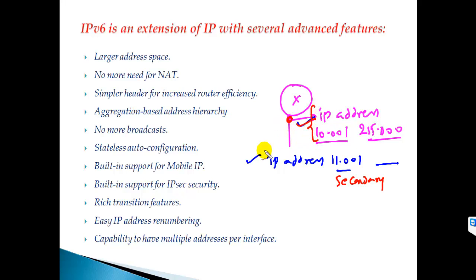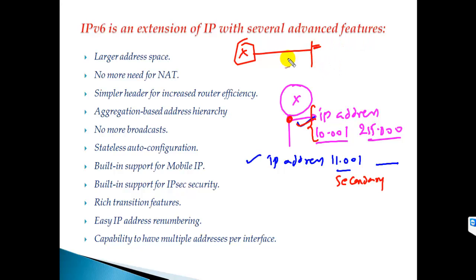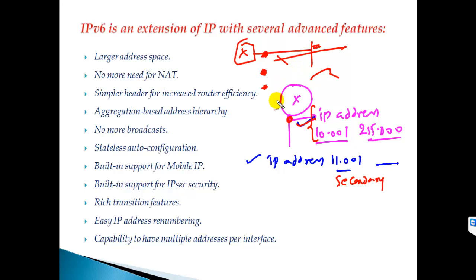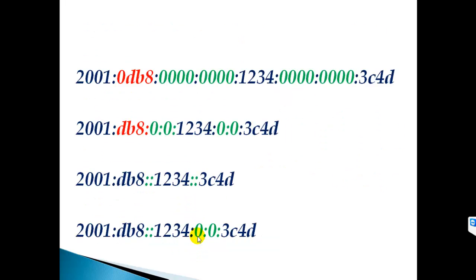In IPv6, on a single interface you can natively assign both a private IPv6 address used for LAN or internal company communication and a public IPv6 address — and in fact more than that. If traffic is coming from one network it will use the private IP; it all depends upon the source. I'll show you how to assign IPv6 addresses when we get into the practical labs.